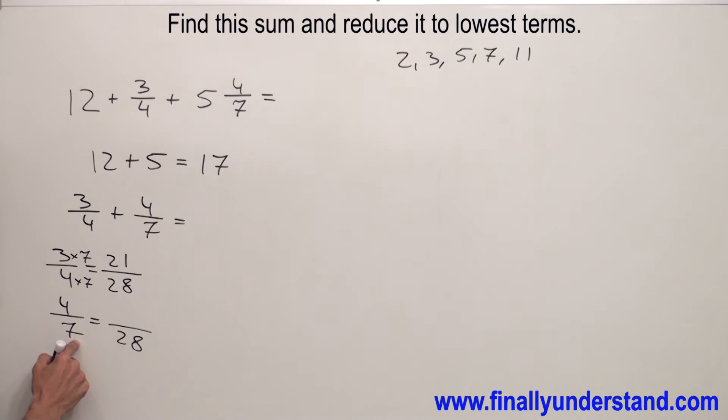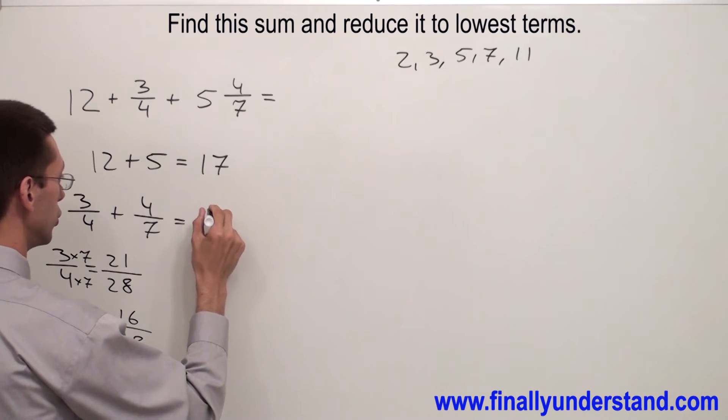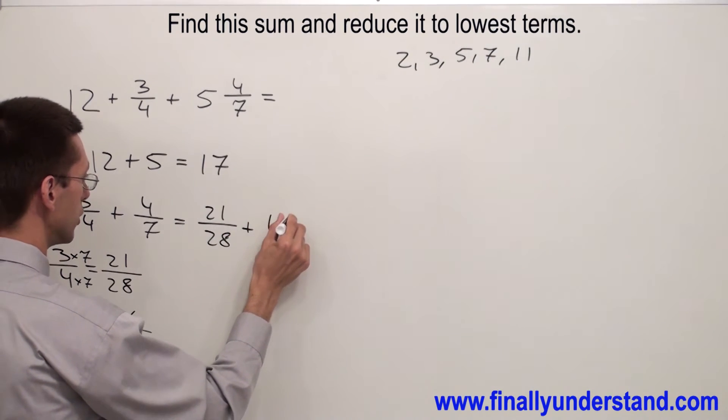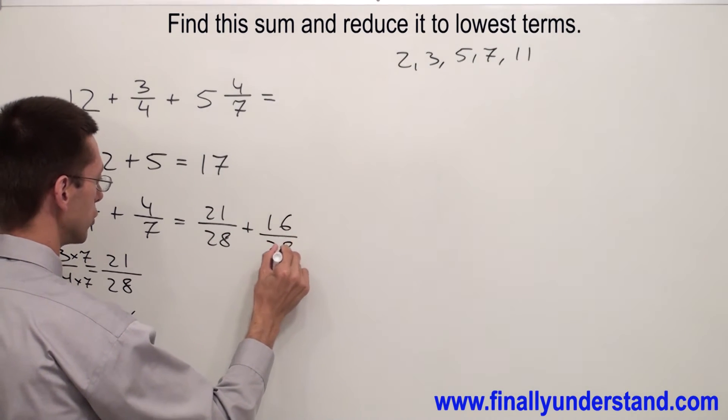By what number do I have to multiply 7 to get 28? I have to multiply by 4. Whatever I did in the denominator, I have to do also in the numerator. So I have to multiply by 4. 4 times 4 gives me 16. So I have 21 over 28 plus 16 over 28.